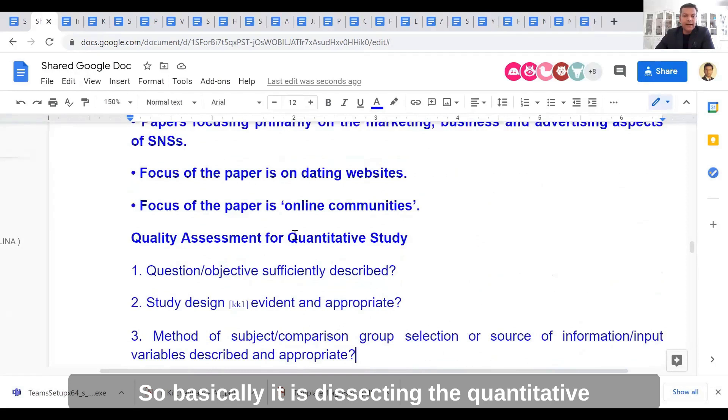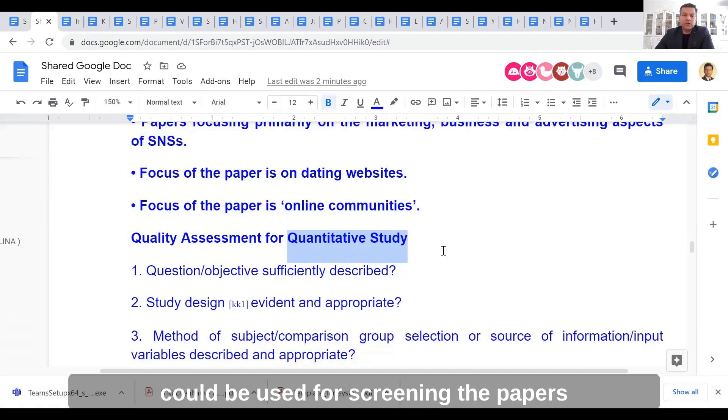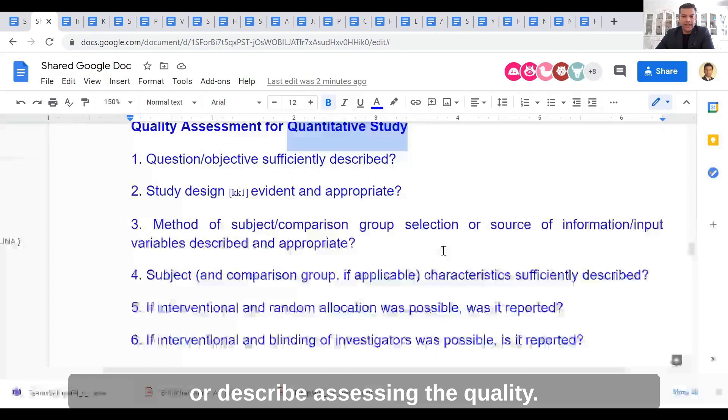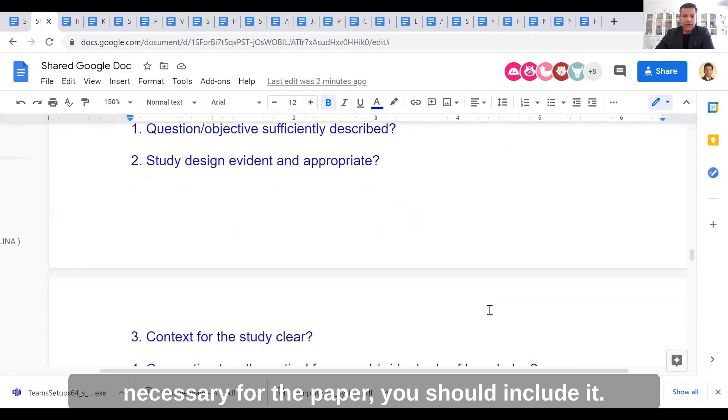Basically, it is dissecting the quantitative methodology and identifying elements from that which could be used for screening the papers or assessing the quality. This is perfectly fine as long as that level of detail is necessary for the paper, then you should include it.